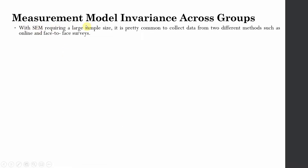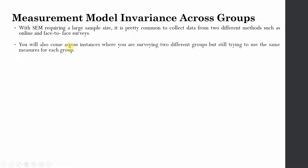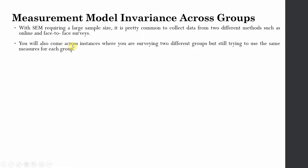With SEM requiring a large sample size, it is pretty common to collect data from two different methods, such as online service or face-to-face service. You will also come across instances where you are surveying two different groups but still trying to use the same measures for each group — maybe collecting data from male and female, from two different cities, or from two different countries.